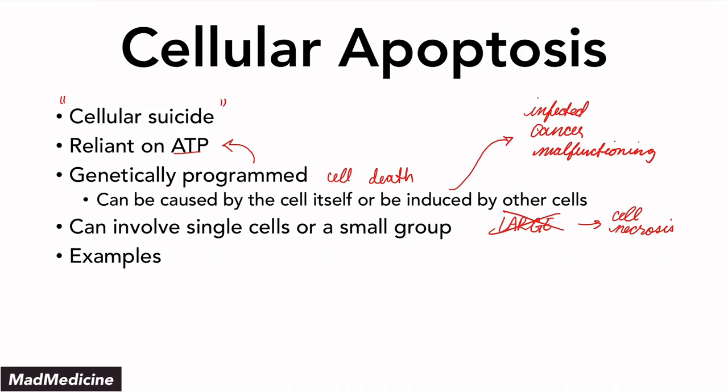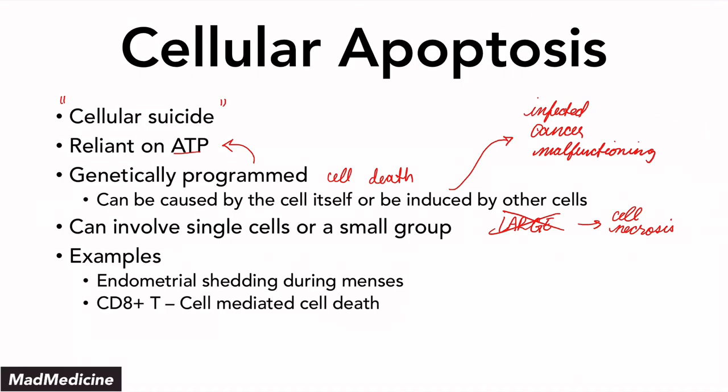Some physiologic examples — some normal examples of apoptosis — are endometrial shedding during the menstrual cycle, where the endometrium dies off and sloughs off. CD8-positive cytotoxic T-cells can cause apoptosis upon another cell; that's one mediated way of cell death. Or embryogenesis — apoptosis is very regular during embryogenesis.